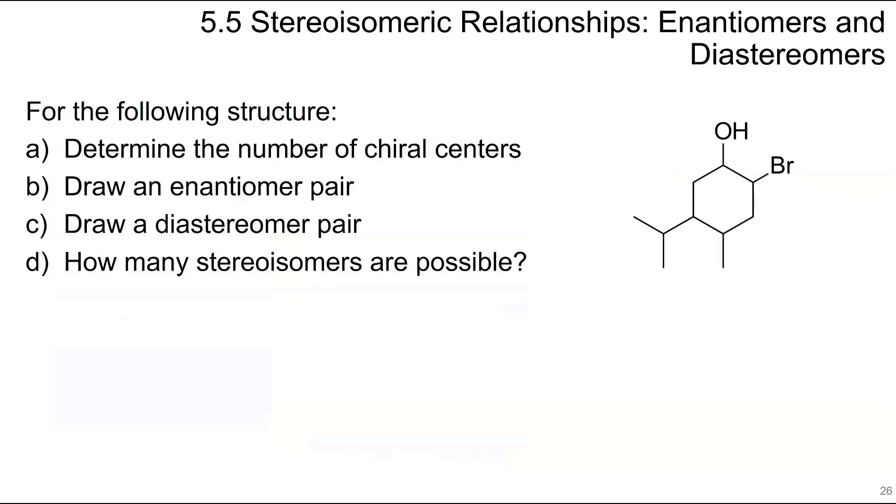For the following structure, determine the number of chiral centers. We're going to look to see which one has different centers. This is one - this is OH next to a carbon, BR and a carbon. This is one, this is one, this is one.